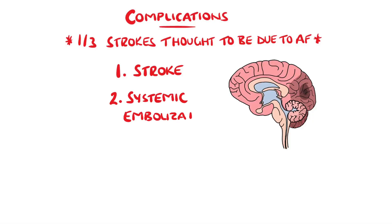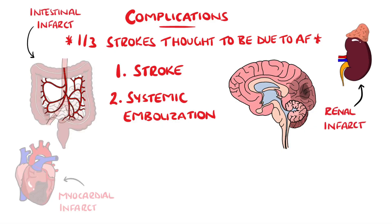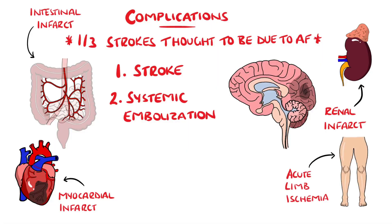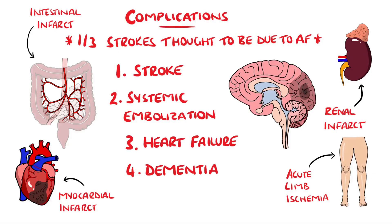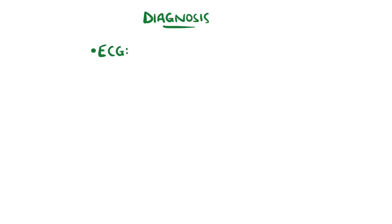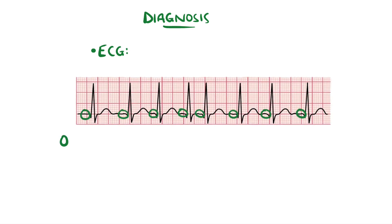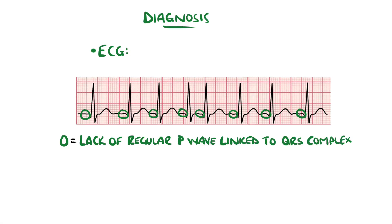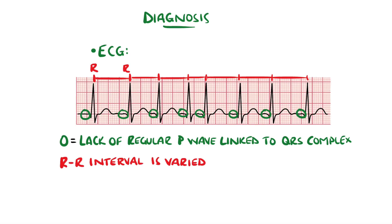The brain is not the only organ this can affect. The emboli can cause intestinal or renal infarctions, myocardial infarction if they enter the coronary arteries, and acute limb ischemia. Other complications include heart failure and dementia. The diagnosis is made on evidence of atrial fibrillation on an ECG, which shows a lack of consistent P waves linked to QRS complexes, and the RR interval, which is the interval between two peaks, is usually varied, giving us the typical irregularly irregular heart rate.